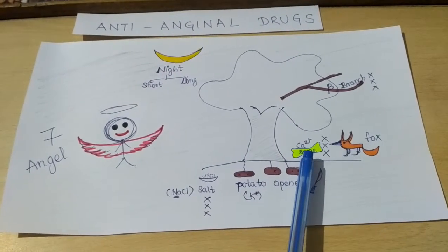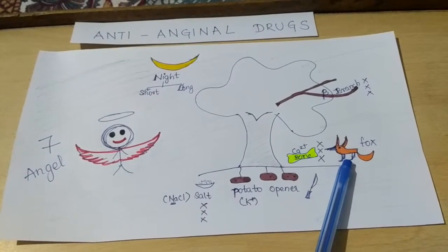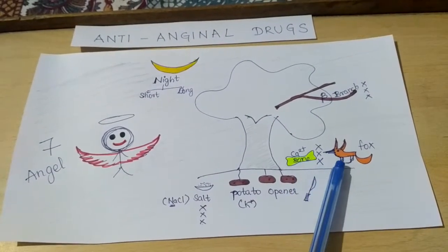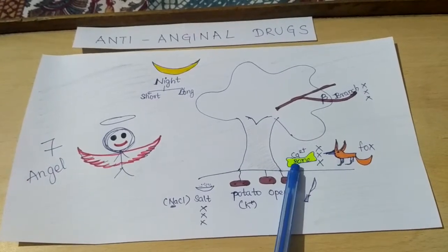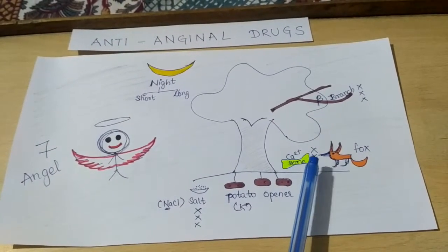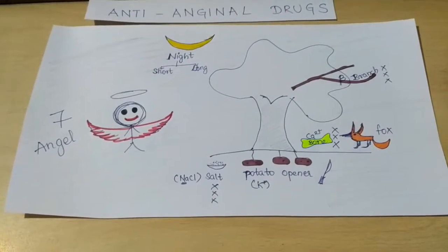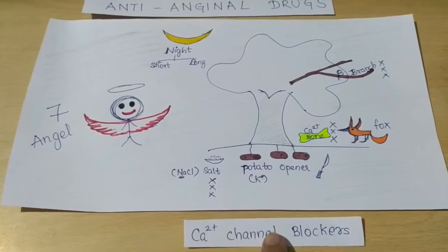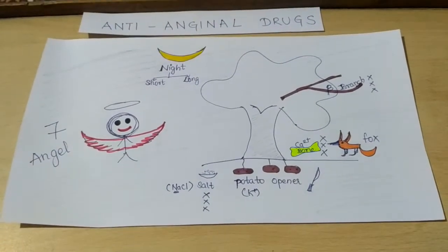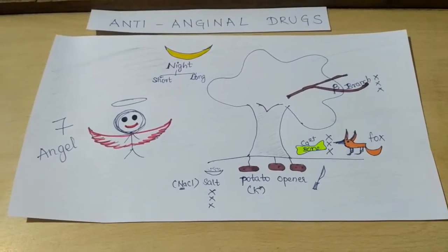Under this tree there is a bone, and there is a Fox. We are trying to stop the Fox from eating the bone. The bone represents calcium, and the crosses represent blocker, so the other class of drug is the calcium channel blockers. The Fox represents the pFOX inhibitor — we are inhibiting the Fox from eating the bone.